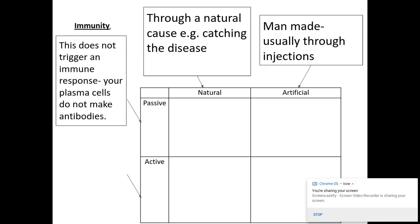Passive, this means you do not have an immune response to it. Your plasma cells do not make antibodies and you don't generate memory cells. If you need to go back and have a look at the immune response, that might be a good idea.